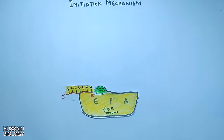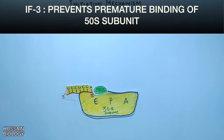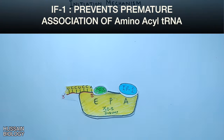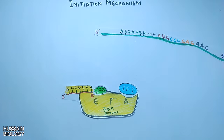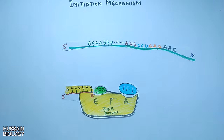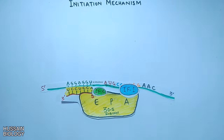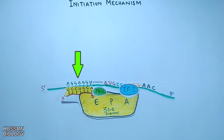The first event is the binding of IF3 (initiation factor 3) to the 30S subunit. This initiation factor prevents premature binding of the 50S subunit to the 30S subunit. Then IF1 also binds, which prevents premature association of tRNA. After that, mRNA associates with the 30S subunit, and the Shine-Dalgarno sequence of mRNA base-pairs with the 16S rRNA sequence, acting as a binding site.